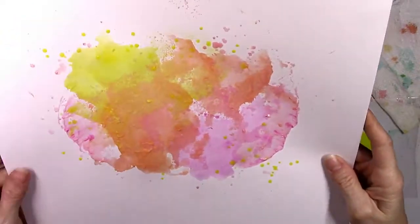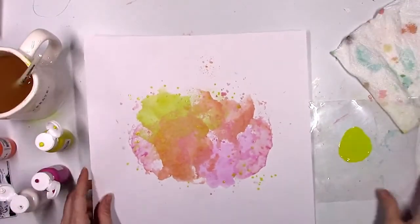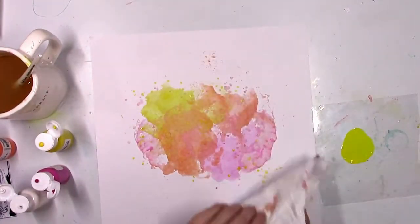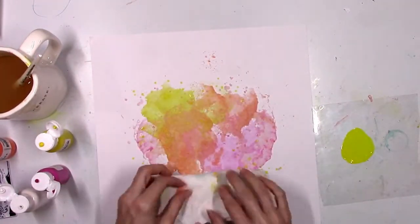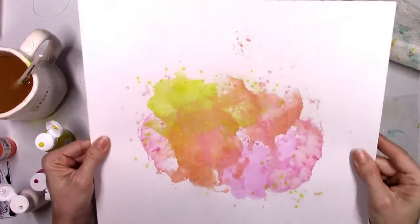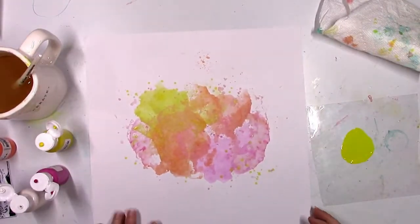So there you can kind of see where I'm pointing, and I'll have some close-ups here. But you can see where the paint kind of stayed together and it didn't completely flatten out. And I wasn't expecting that, and it looks really cool because it's going to give you a little bit of texture and just give it some interest and make it look different. I love how that's looking.